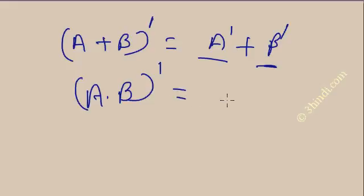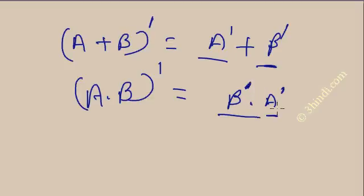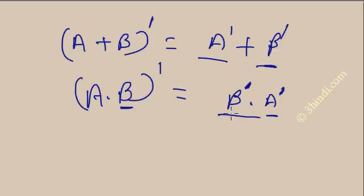Another property to remember: (A plus B) dash equals A dash plus B dash for any matrix. And (A dot B) dash equals B dash dot A dash — not A dash dot B dash. You have to reverse the order: if A is the first matrix in the product, then in the transpose result, B dash comes first.